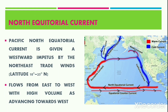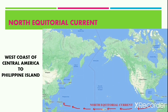This North Equatorial Current starts moving from the east of the Pacific Ocean towards the west. As it flows from east to west, the volume of the water increases as it advances towards the west. Thus, the North Equatorial Current moves from the west coast of Central America to the Philippine coast.